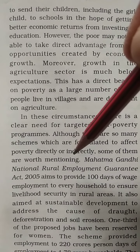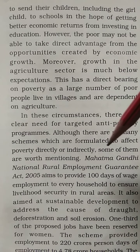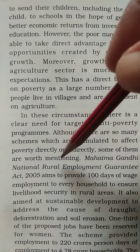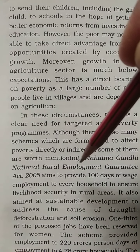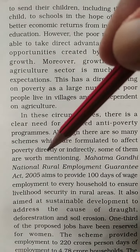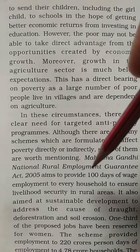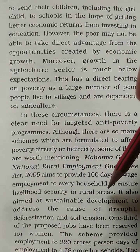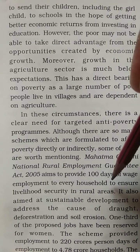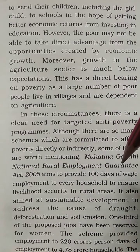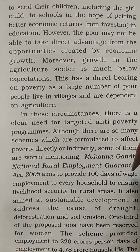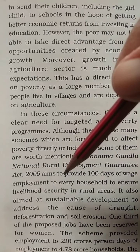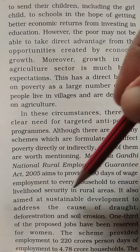Some of them are worth mentioning. Mahatma Gandhi National Rural Employment Guarantee Act 2005 — jise MGNREGA bhi kaha jata hai — yeh 2005 mein banayi gayi thi. Its aim is to provide 100 days of wage employment to every household to ensure livelihood security in rural areas — grameen area mein jeevan ki suraksha pradhan karne ke liye, prati ek ghar ko jo kaam nahi hai usse ek saal mein 100 din ka wage employment diya jata hai, jisme daily wages milti hai.